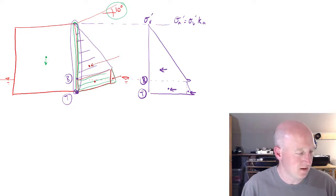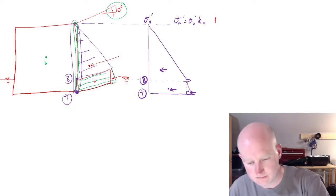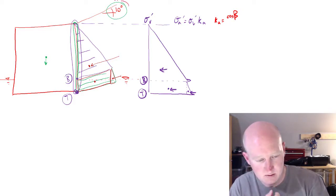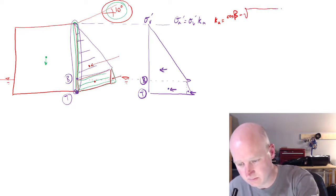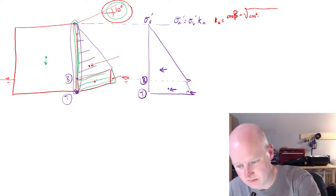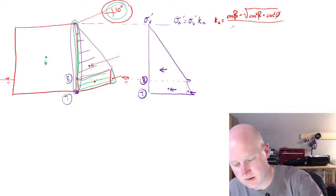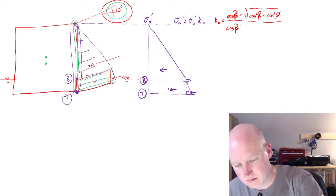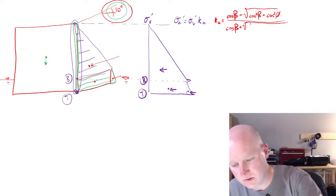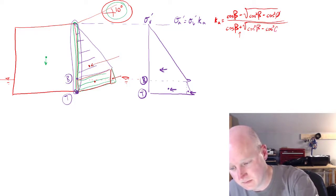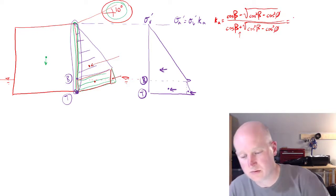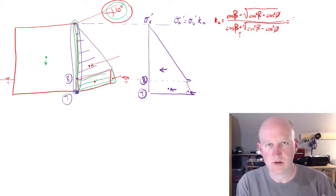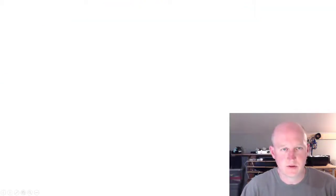We need to get Ka. The equation for Ka is: cosine of beta — where beta is the inclination of the backfill — minus the square root of cosine squared of the backfill angle minus cosine squared of the friction angle, and that gets divided by the same thing with the addition in the denominator. Remember that cosine squared is just cosine of something times cosine of something.